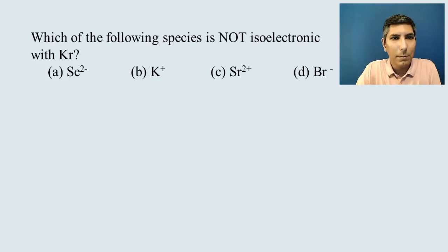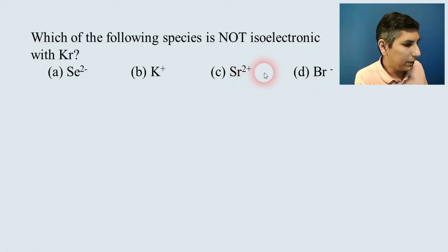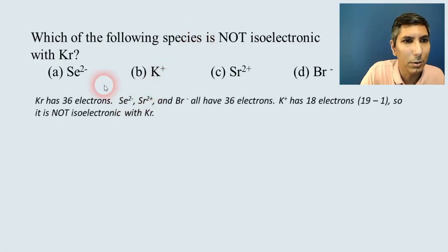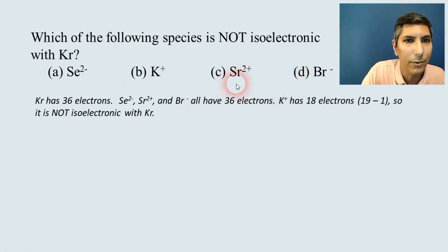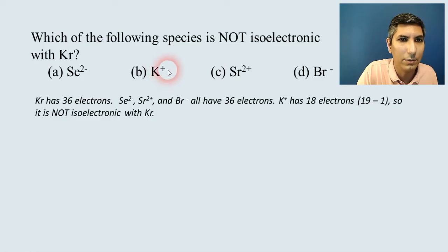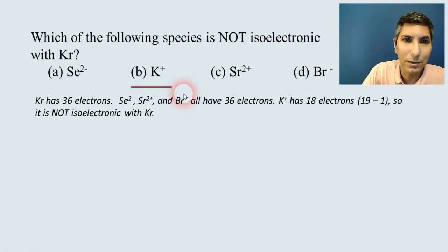Here's a practice question: which of the following species is not isoelectronic with krypton? Krypton has 36 electrons. Looking at the periodic table, the one that would not have 36 electrons is the potassium ion K⁺. Potassium normally has 19 electrons, but since it has lost one with the +1 charge, it would have 18 — so potassium is the answer.